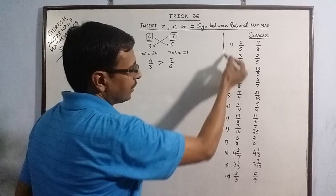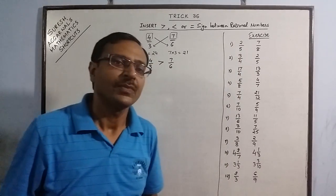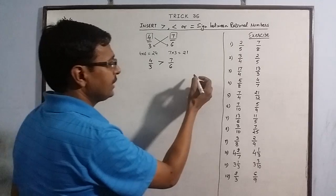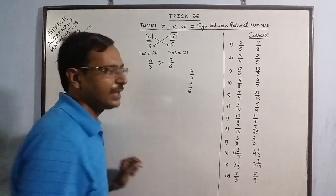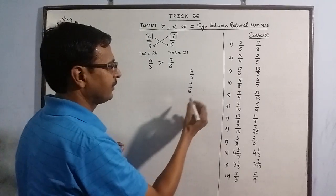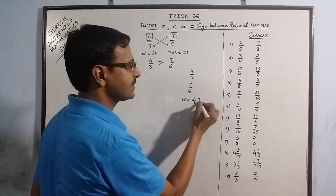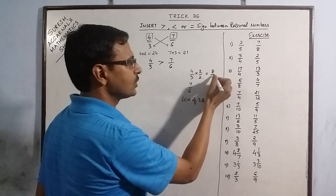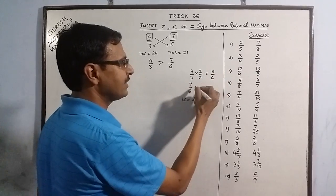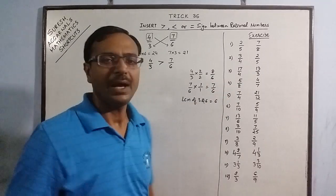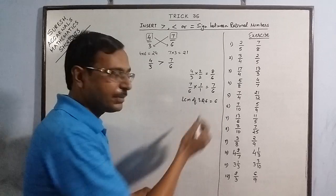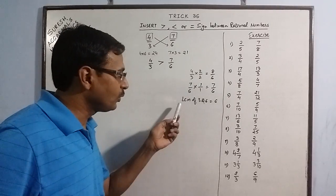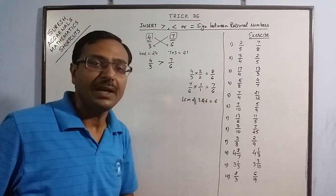I will show you the method through which teachers teach junior students. In junior classes, for 4 by 3 and 7 by 6, they make students find the LCM of 3 and 6, which is 6. They multiply the numerator and denominator by 2, so this becomes 8 by 6, and this is 7 by 6. Then they compare the numerators. But this process becomes more tedious when the numbers in the denominator are higher, so you have to find the LCM of big numbers, which is tedious work.